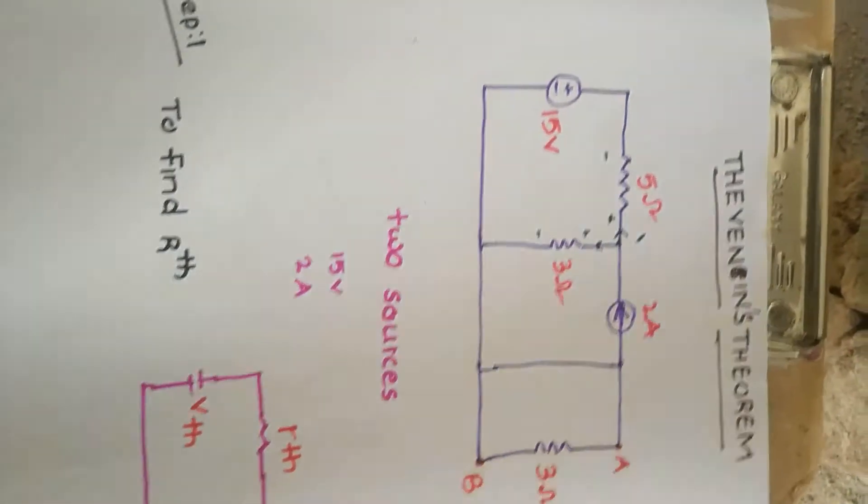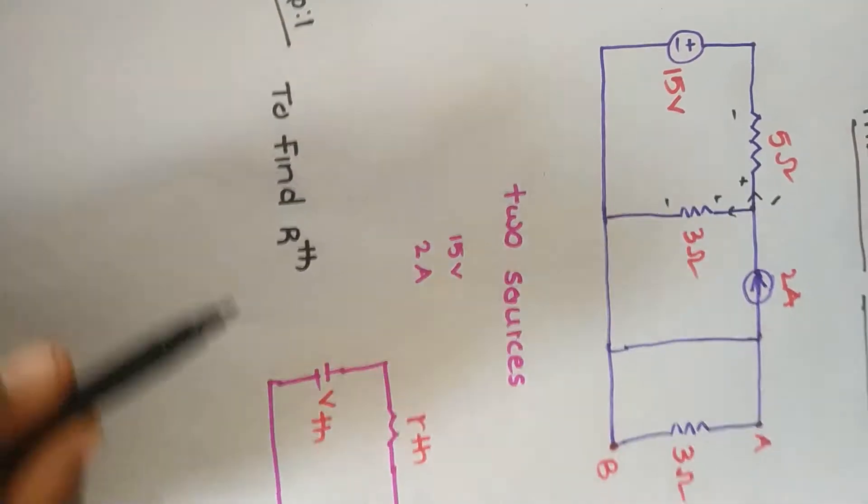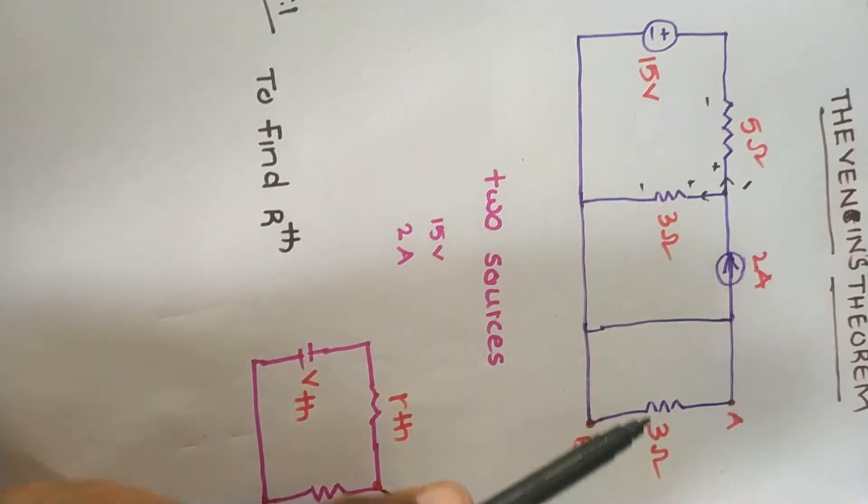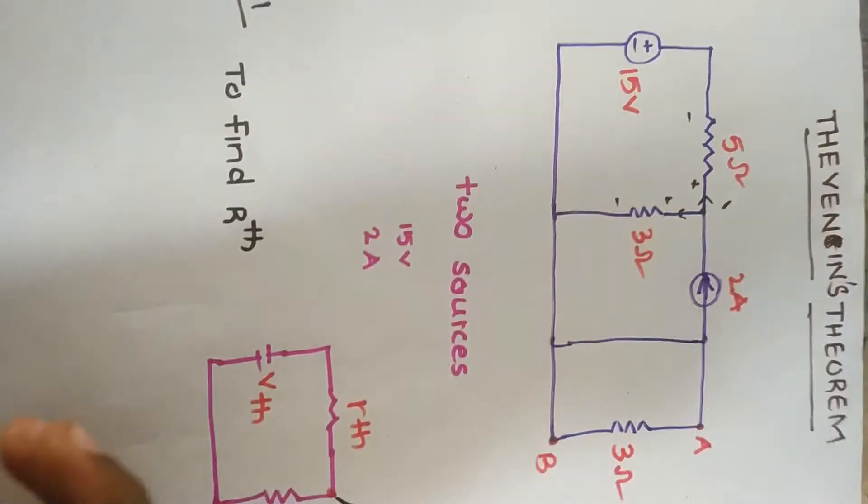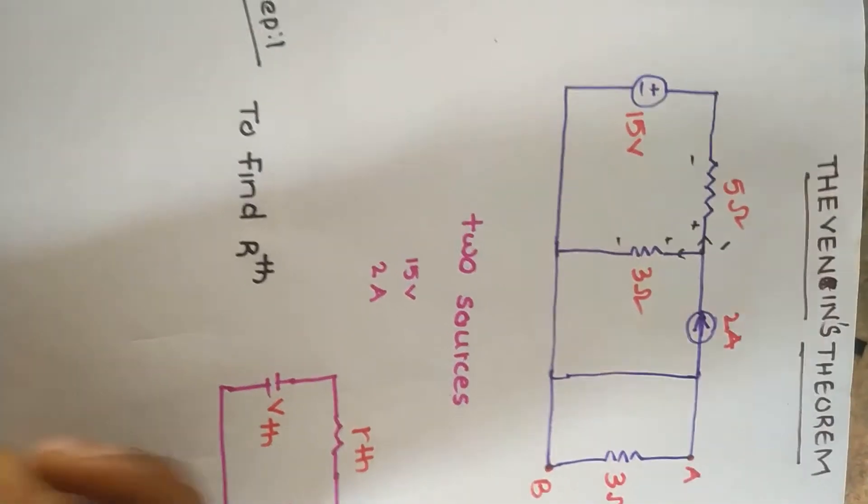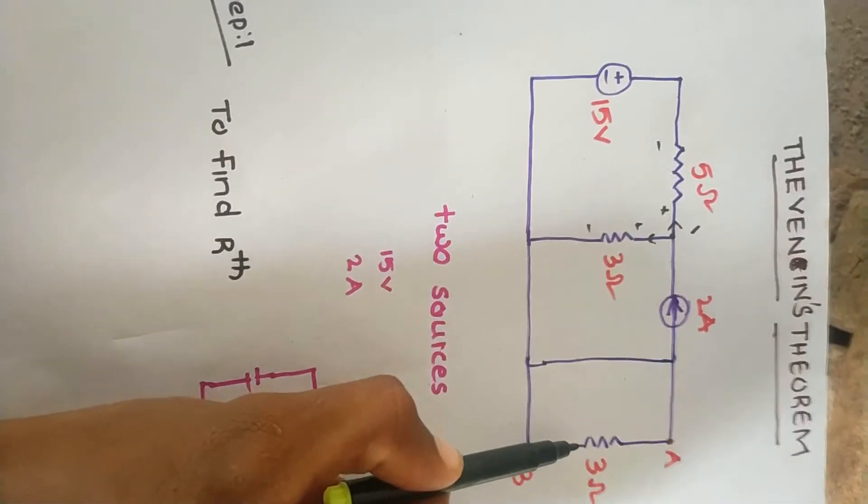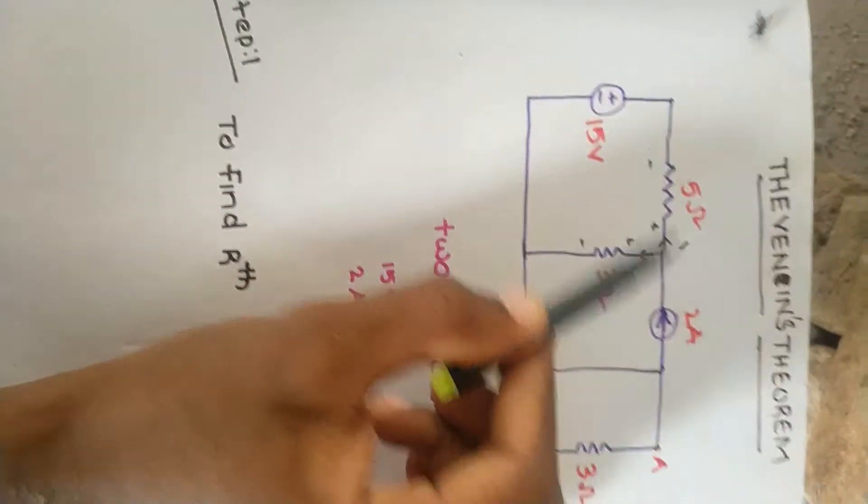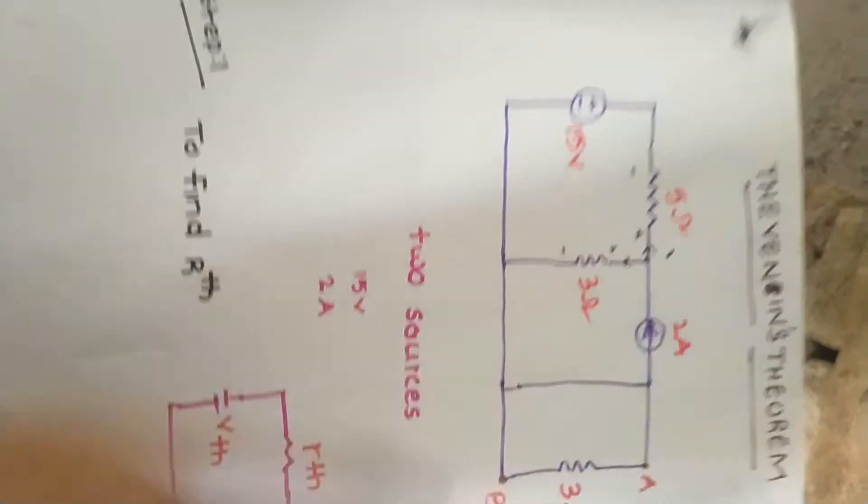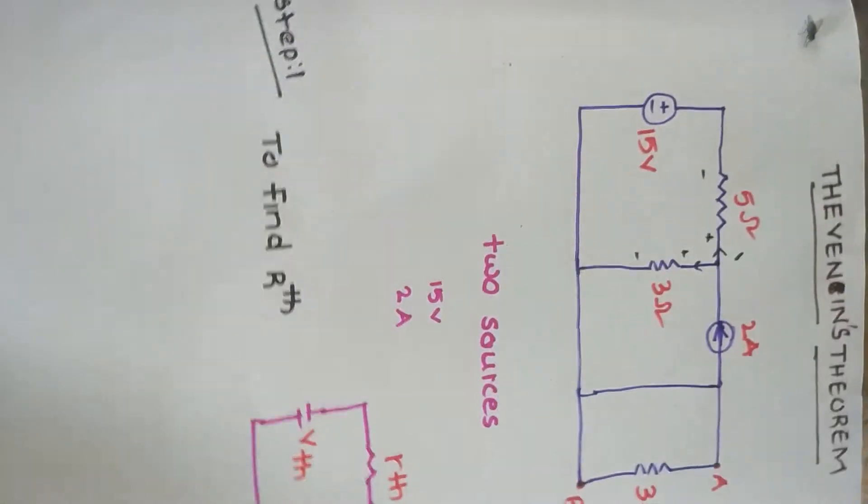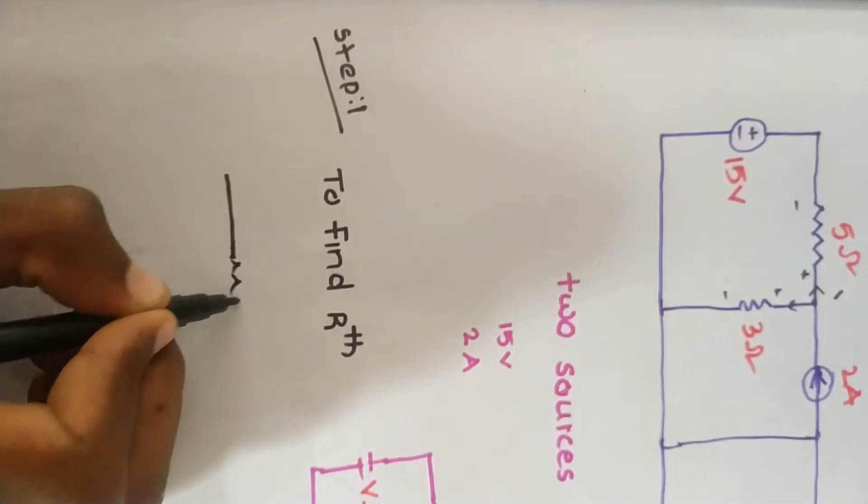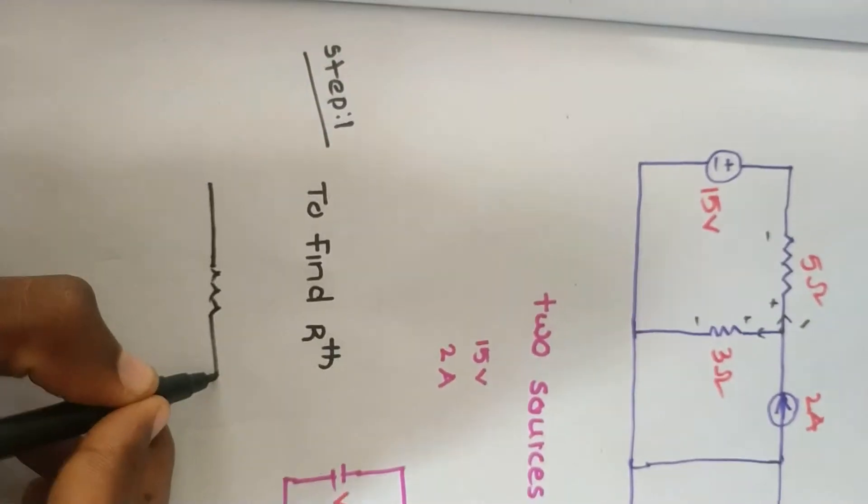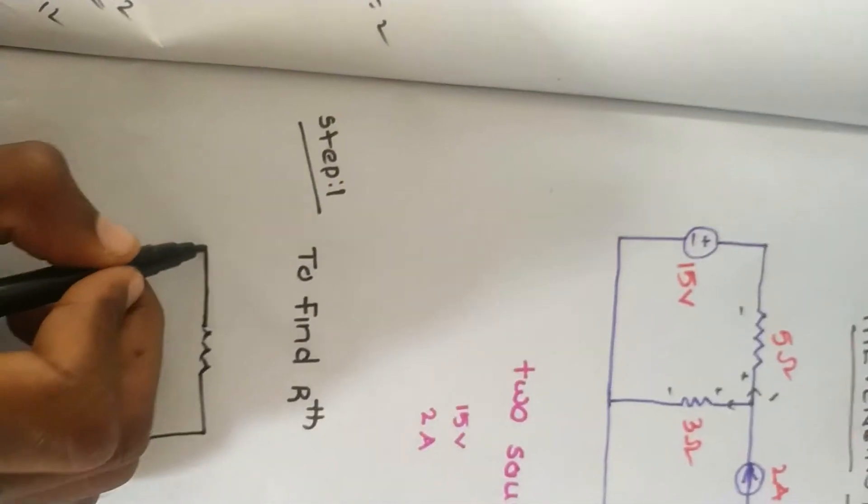First step, we find R_th. To find R_th from point A to point B, we remove the load resistance 3 ohms, eliminate the voltage sources by short circuit, and eliminate current sources by open circuit.